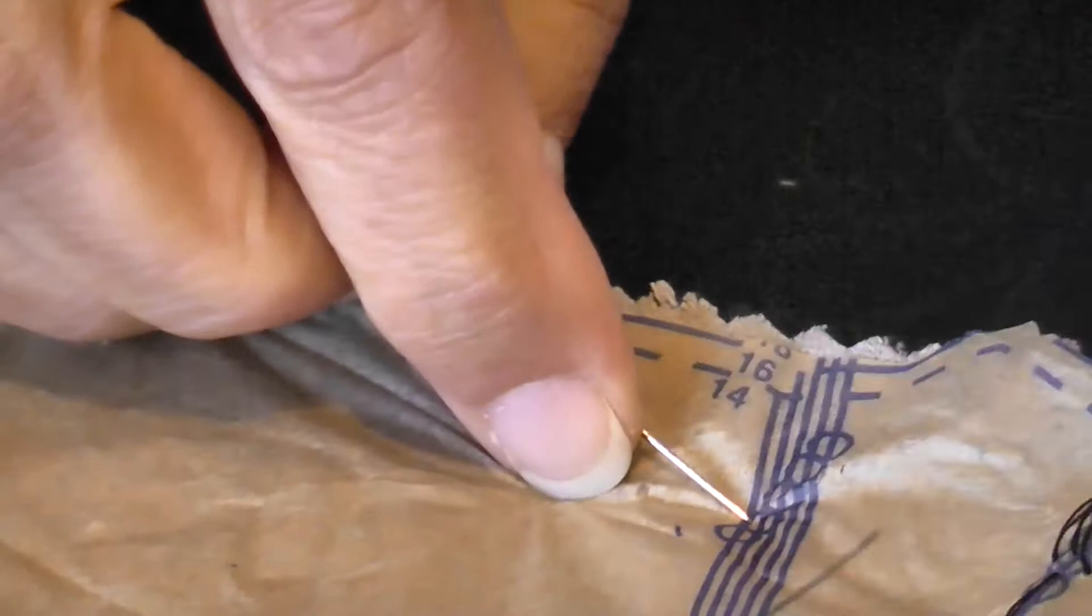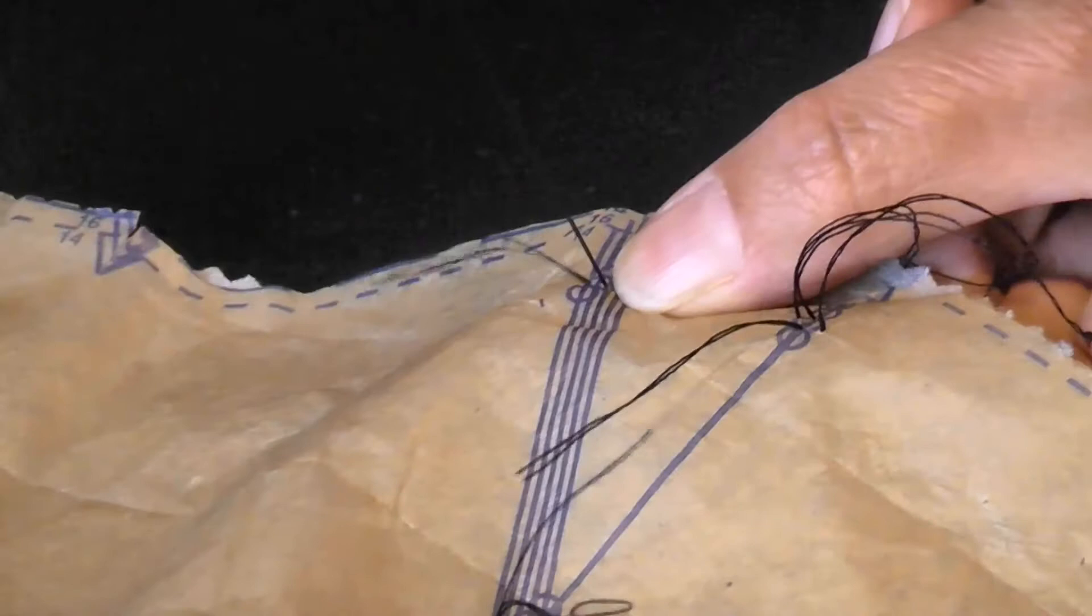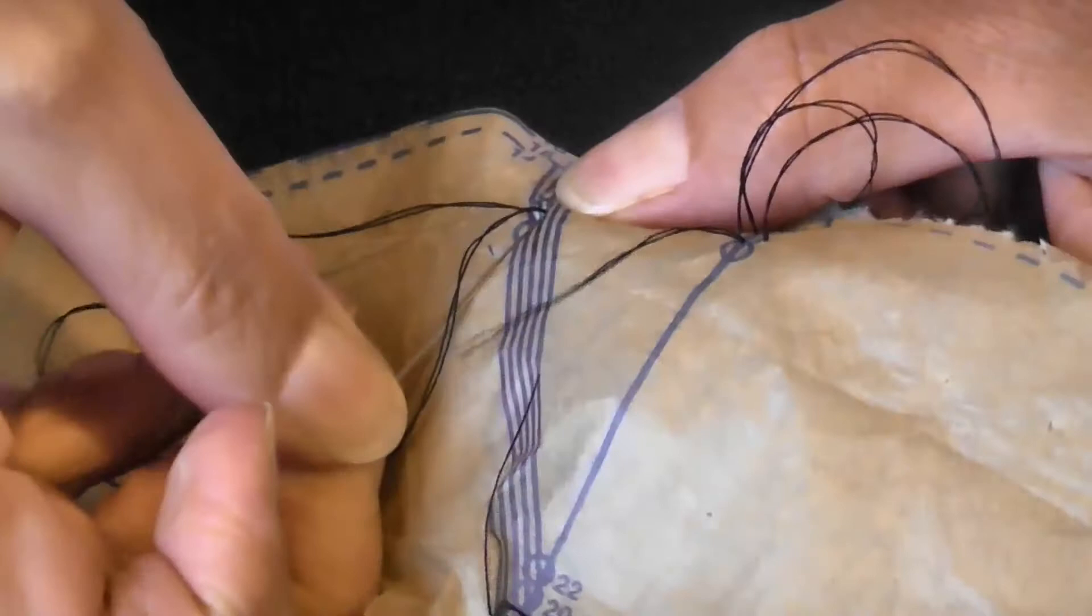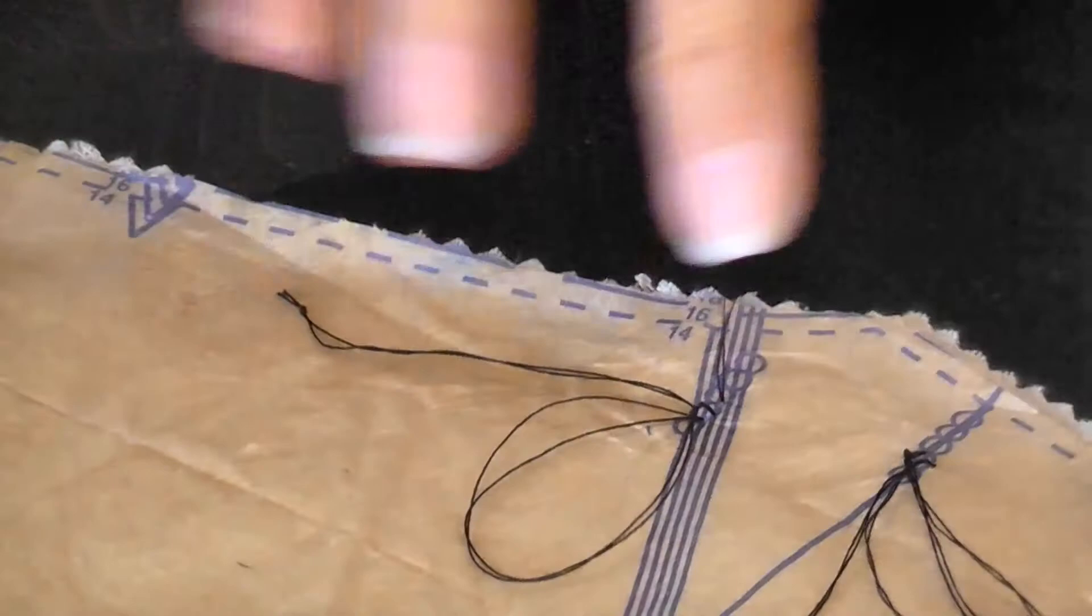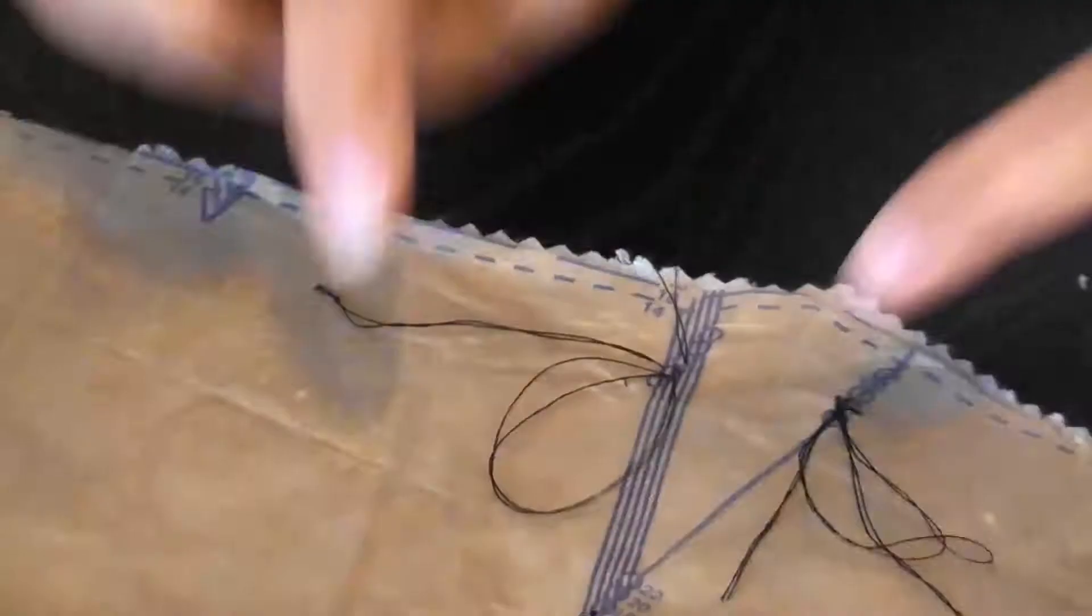And the last one is the third part of the dart. So that's the lower end. And that's pretty much all the thread on that needle for now used up. And there we have one dart marked in the three places indicated on the pattern.